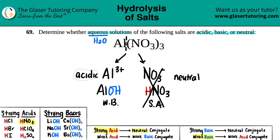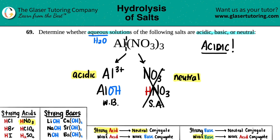Putting the two together: acidic plus neutral equals acidic. So this salt, aluminum nitrate, would be acidic. That's the answer for this one. Stay tuned, we've got a couple more. I hope this helped — let me know in the comments, subscribe to the channel, and I'll see you in a little bit.